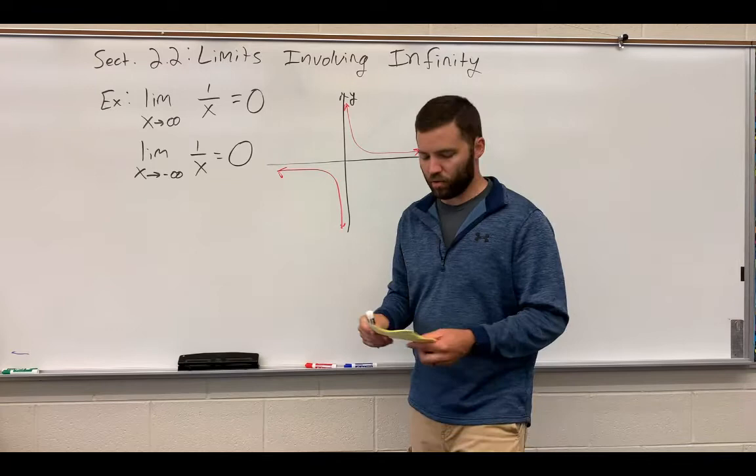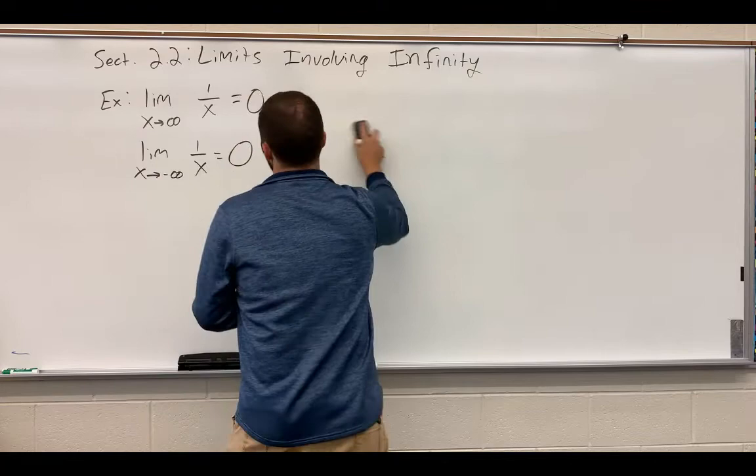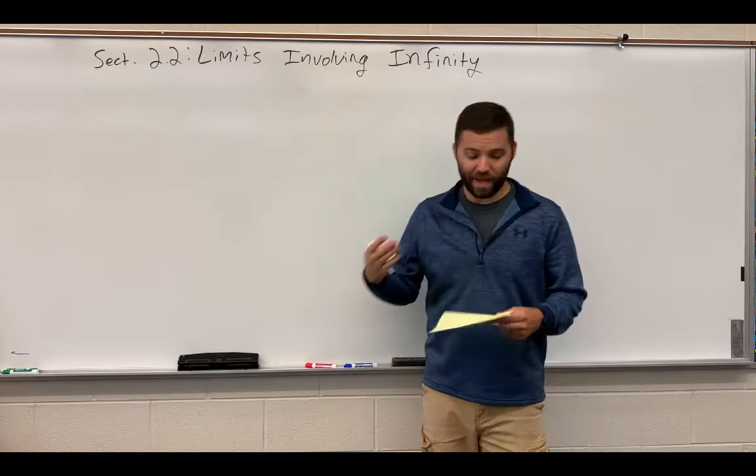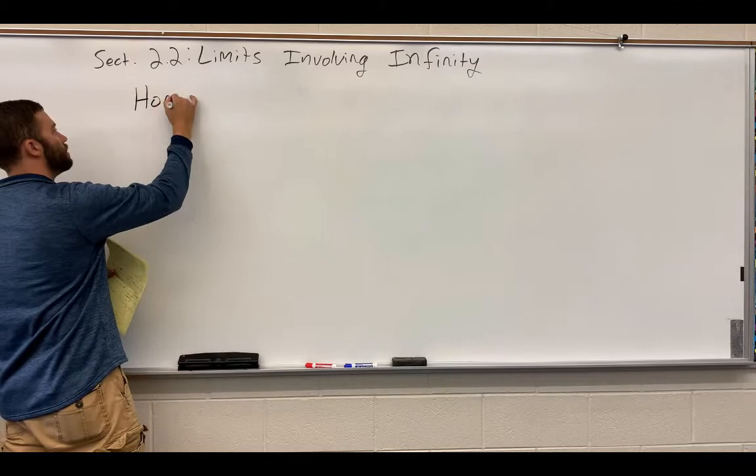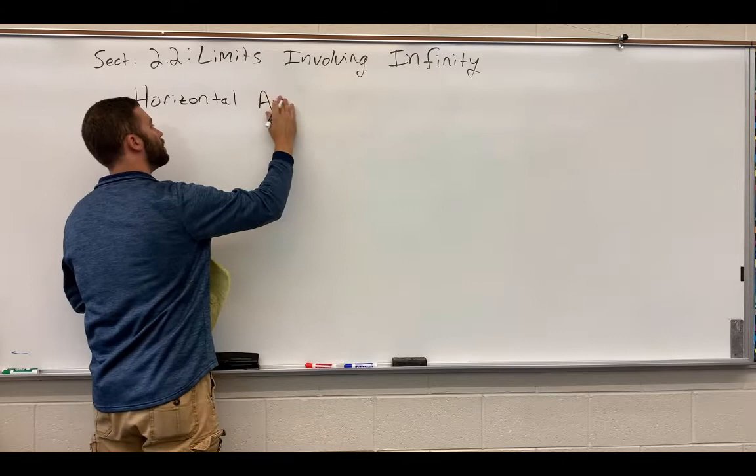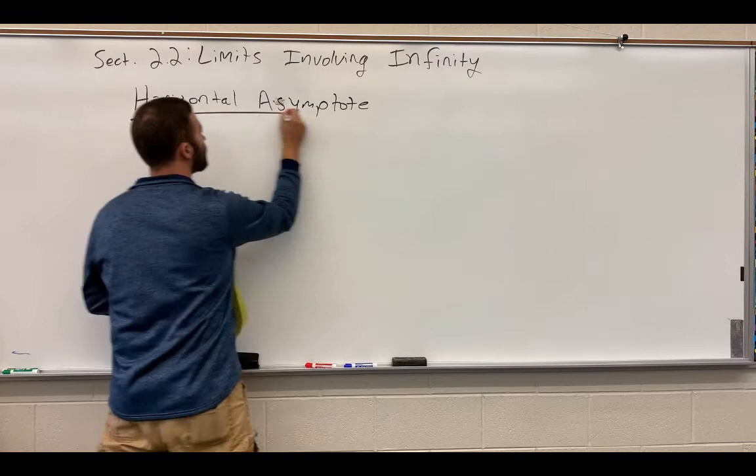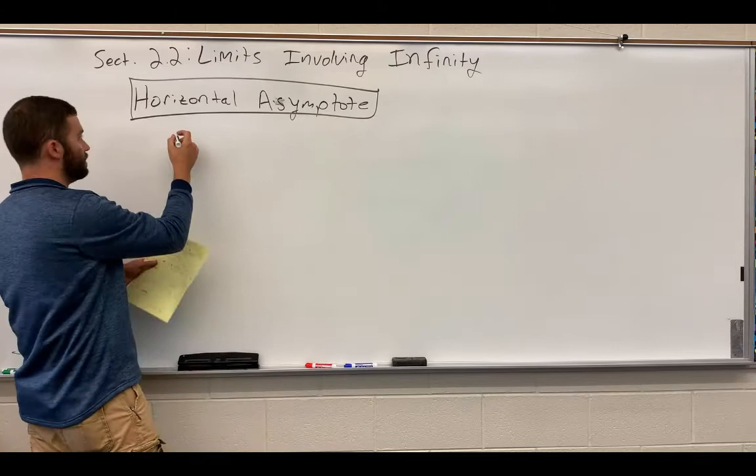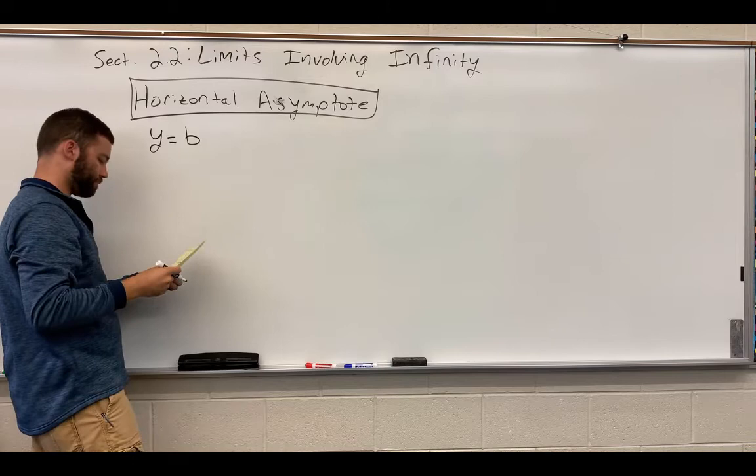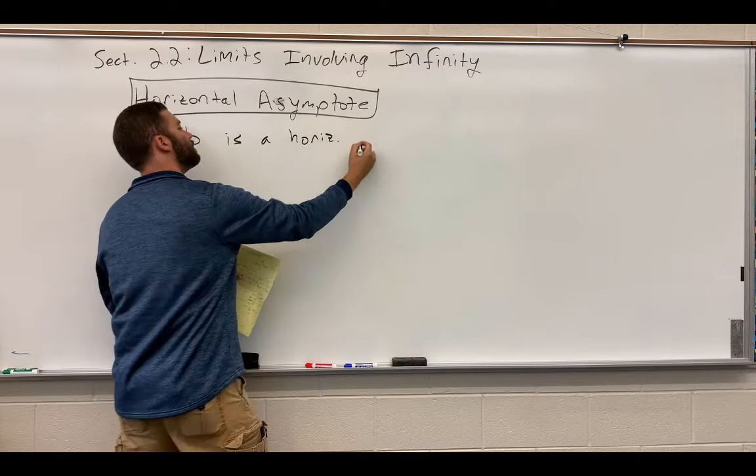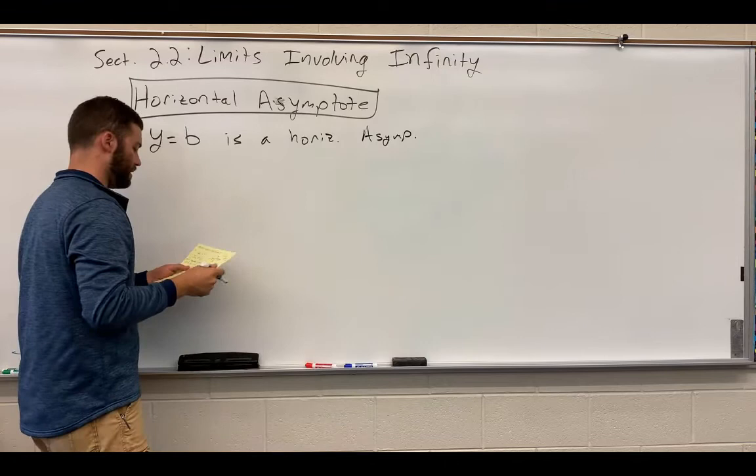Now, that leads nicely into a definition for a horizontal asymptote that is based on limits. Here is the definition of a horizontal asymptote, my personal favorite definition. A horizontal asymptote is the line Y equals B. Y equals B is a horizontal asymptote if one of two things.